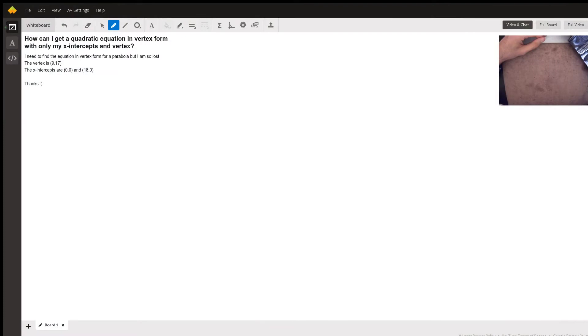All right, hello everyone. So we've got a question here: how can I get a quadratic equation in vertex form with only my x-intercepts and vertex? So we need this thing in vertex form and we know the vertex is (9,17) and x-intercepts are (0,0) and (18,0). Okay, so let's flip over to the video.